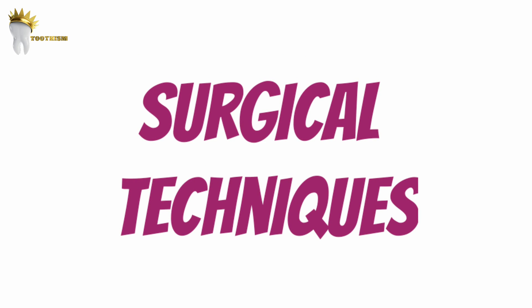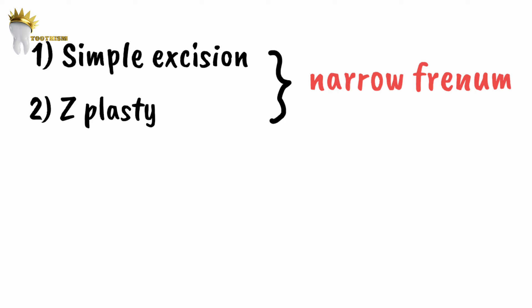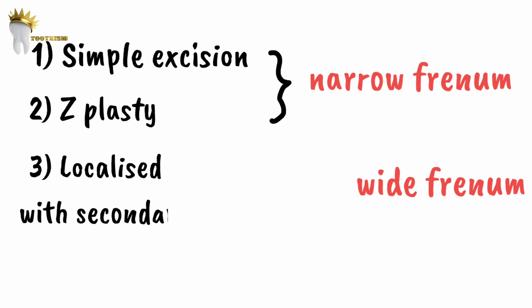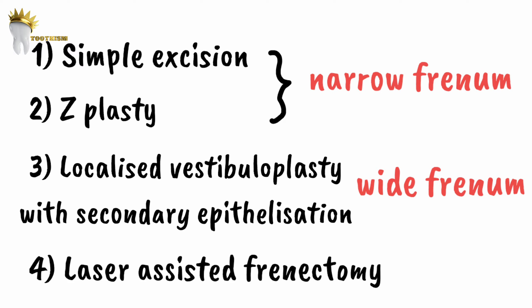Surgical techniques for frenectomy include the simple excision technique and the Z-plasty technique. These two are effective when the mucosal and fibrous tissue band is narrow. When the frenal attachment has a wide base, localized vestibuloplasty with secondary epithelization is preferred. The fourth technique is laser-assisted frenectomy.